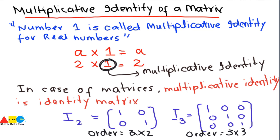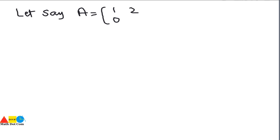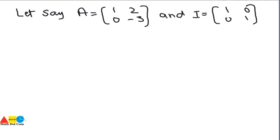In case of real numbers, one is replaced by the identity matrix in case of matrices. So for matrices we need an identity matrix — it means the identity matrix plays the same role in matrix operations as the number one in operations with real numbers. Now let's apply it on the matrices so that we can have a clear concept. Let's say we have a matrix A equals 1 0 / 2 −3, and an identity matrix that is 1 0 / 0 1. Both of these matrices must be of the same order and they must be square matrices.